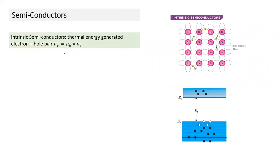Yesterday we discussed semiconductors and certain energy bands. We defined the valence band, and taking the example of silicon or germanium semiconductor, we established that all valence band states are occupied. And in the conduction band, we also discussed how electrons behave in these materials.